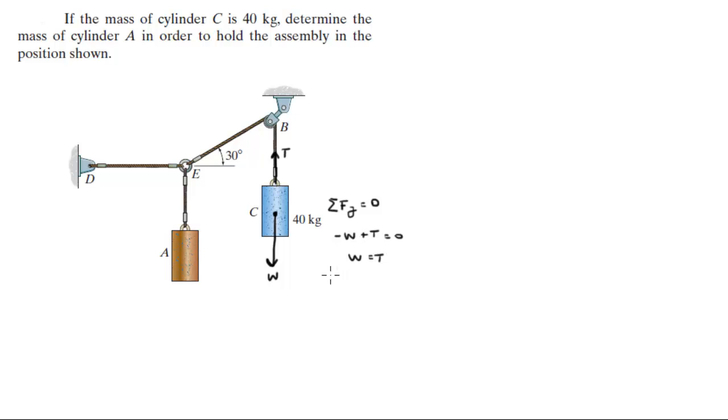What is the weight? The weight is calculated by multiplying the mass, which is 40 kilograms, times 9.81 meters per second squared, which is the acceleration of gravity.